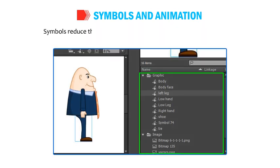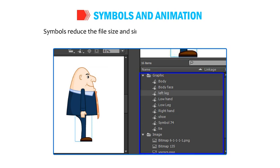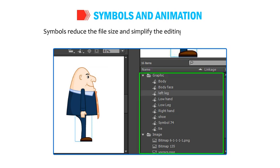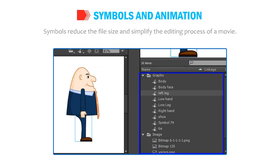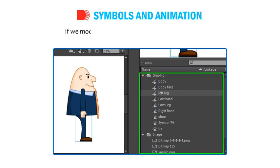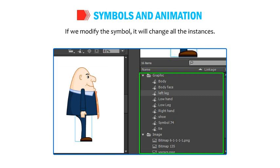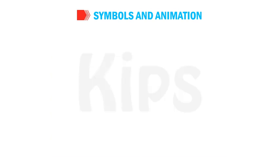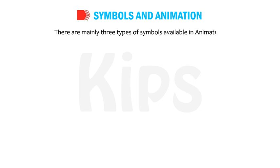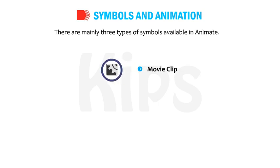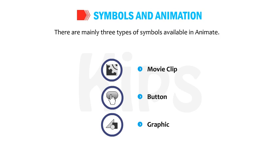Symbols reduce the file size and simplify the editing process of a movie. If we modify the symbol, it will change all the instances. There are mainly three types of symbols available in Animate: Movie Clip, Button, and Graphic.